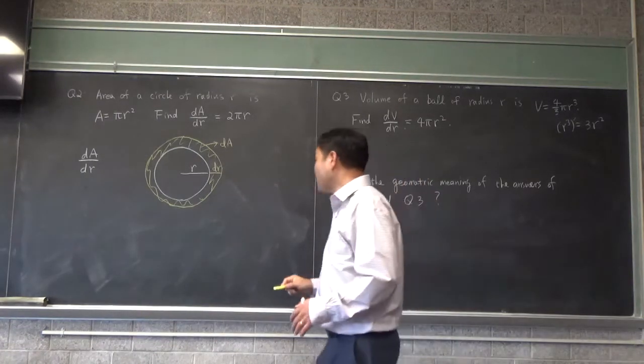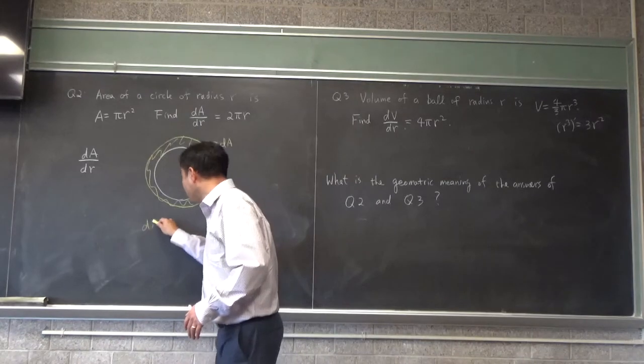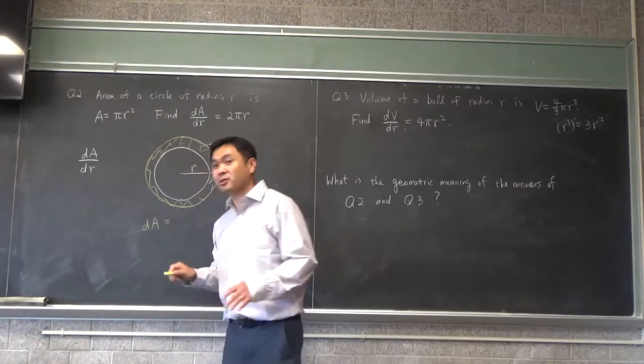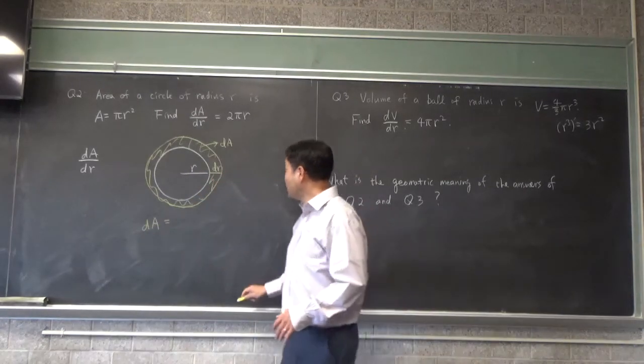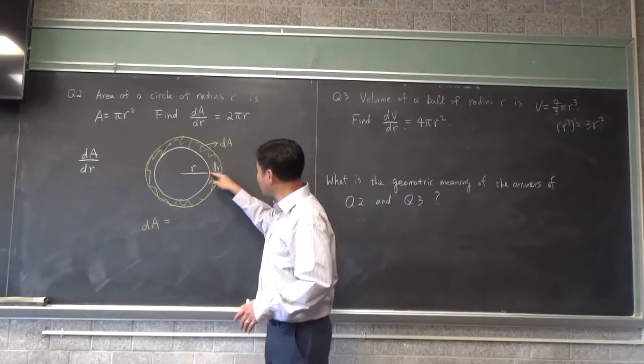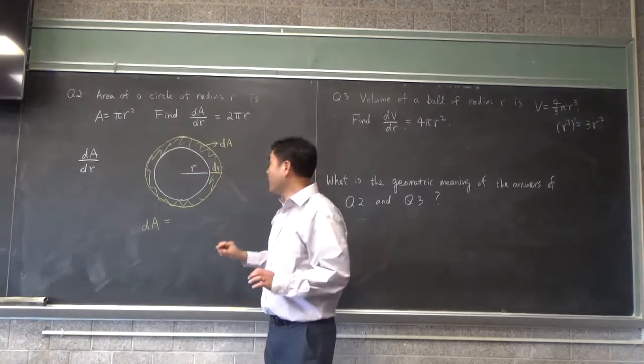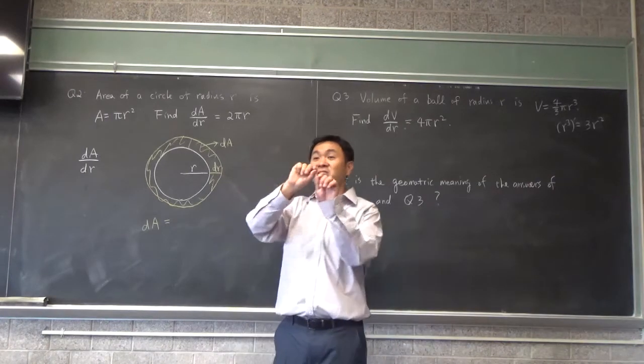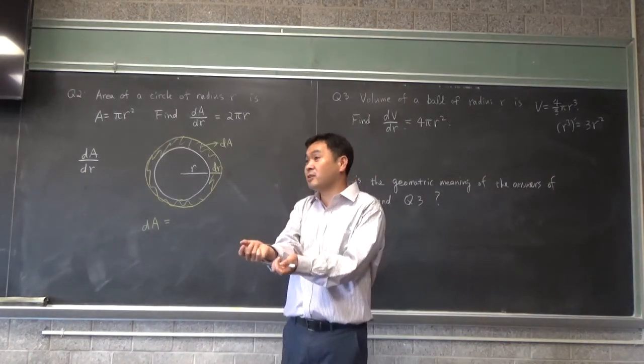And now let's try to calculate the increase in area. Well, here's an idea. You cut this area, cut it right here, right? And because dr is so small, it's a thin strip, right? So you unwrap it.